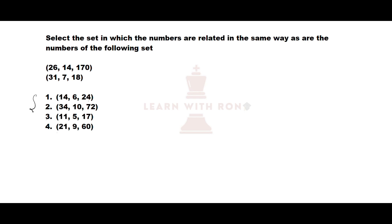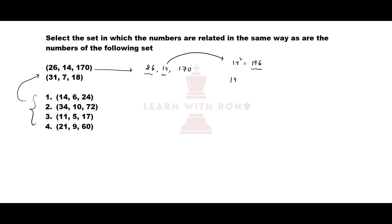Next question: find the set from the options that follows the same pattern as the given two sets. First set: 26, 14, 170. Squaring the middle number: 14² = 196, then 196 − 26 = 170, which is the third number. The pattern is: second number squared minus first number equals the third number.